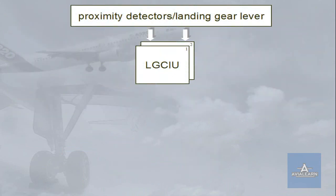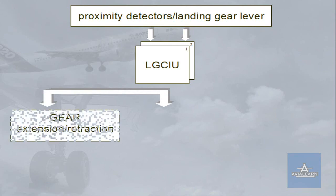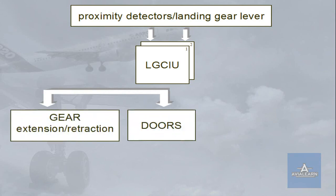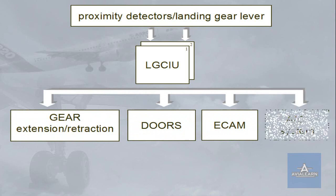Two landing gear control and interface units (LGCIUs) control the extension and retraction of the gear and the operation of the doors. The LGCIUs also supply information about the landing gear to ECAM and the other aircraft systems.